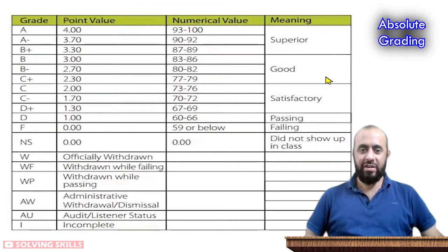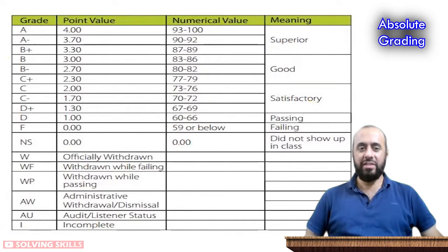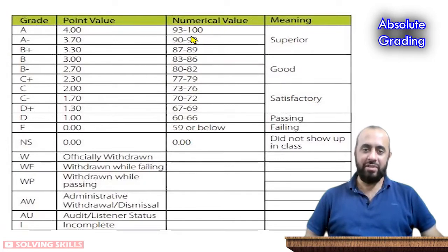If a course is well-established and low-level with expert professors, absolute grading can work. But in modern education, where courses are evolving rapidly, it's really difficult to design a standard course where most students fall into the expected absolute mark brackets. In most cases it doesn't happen, so we need to use relative grading.